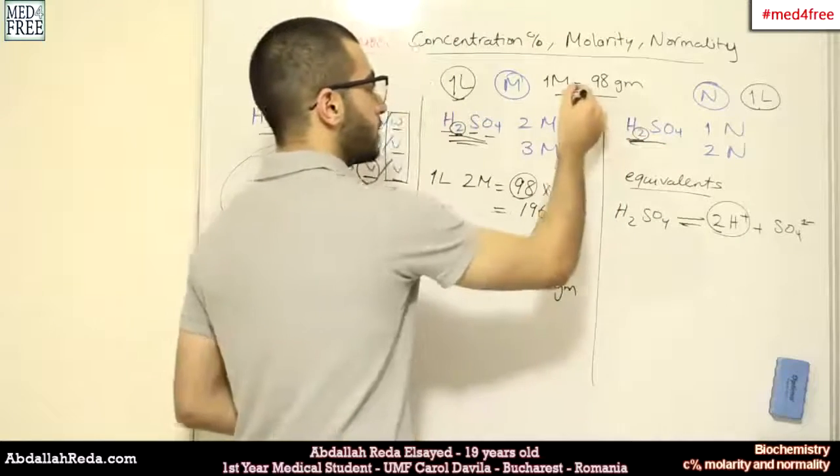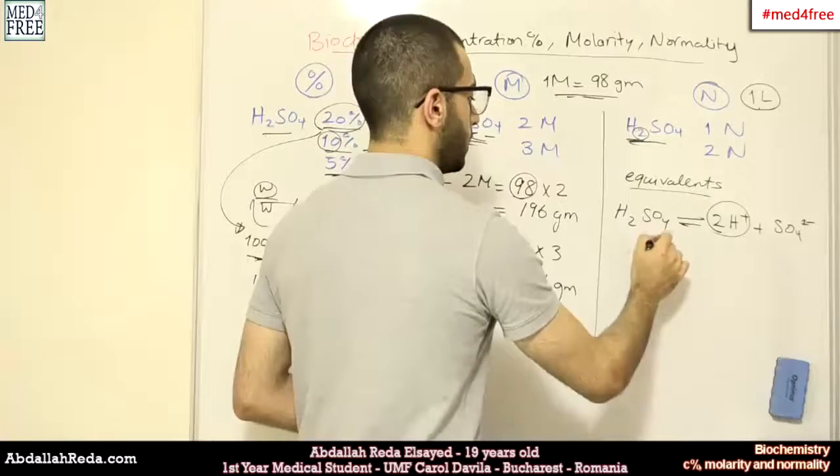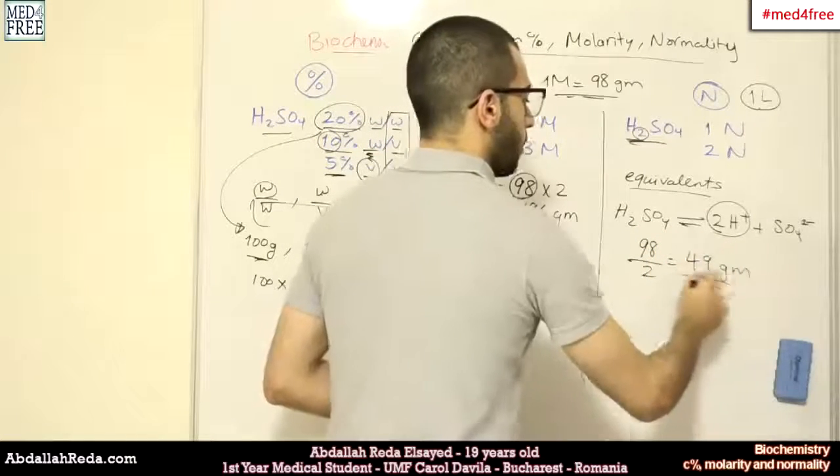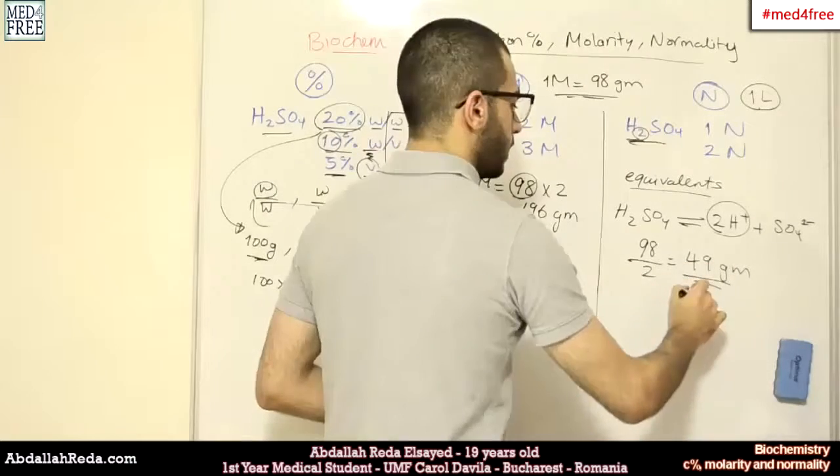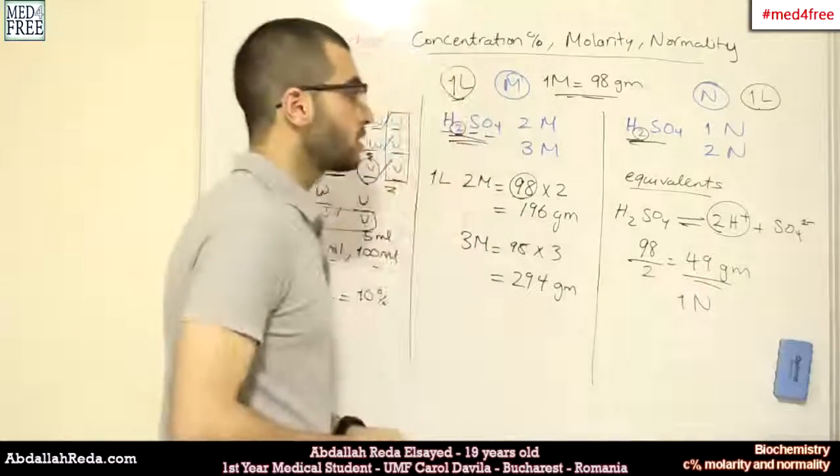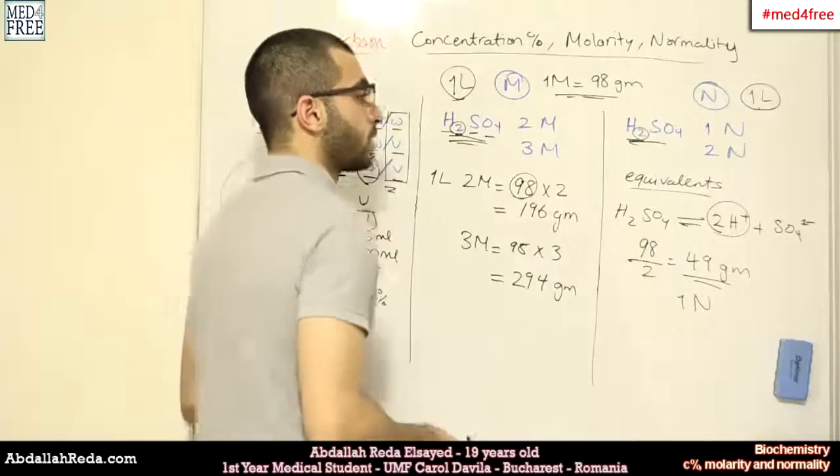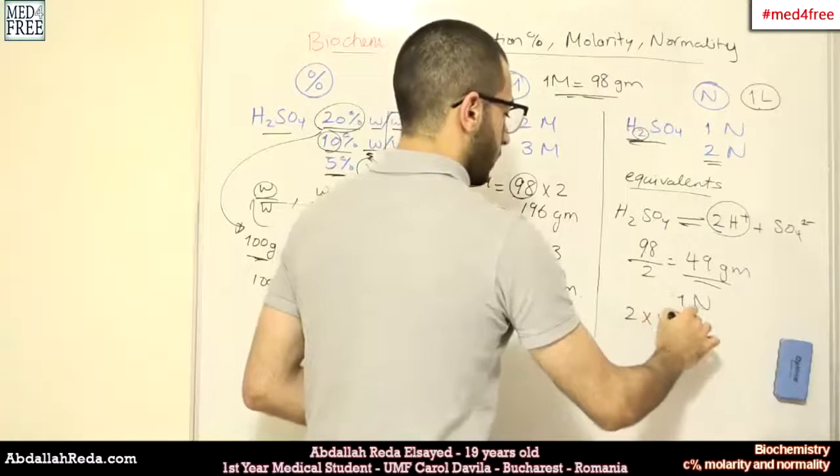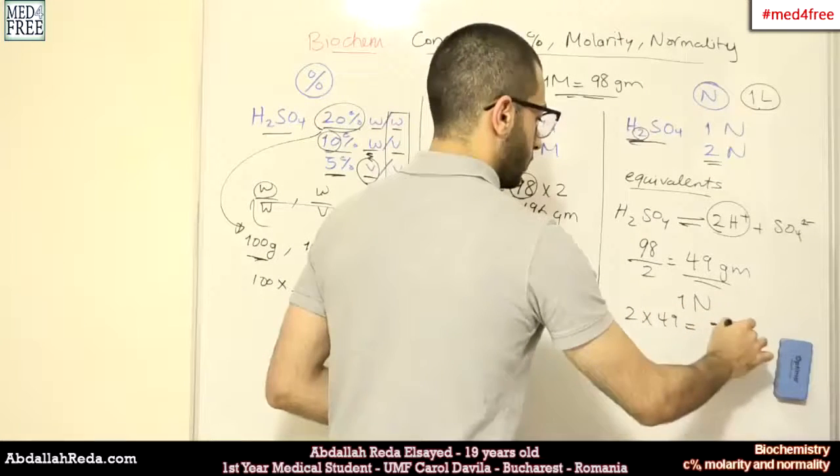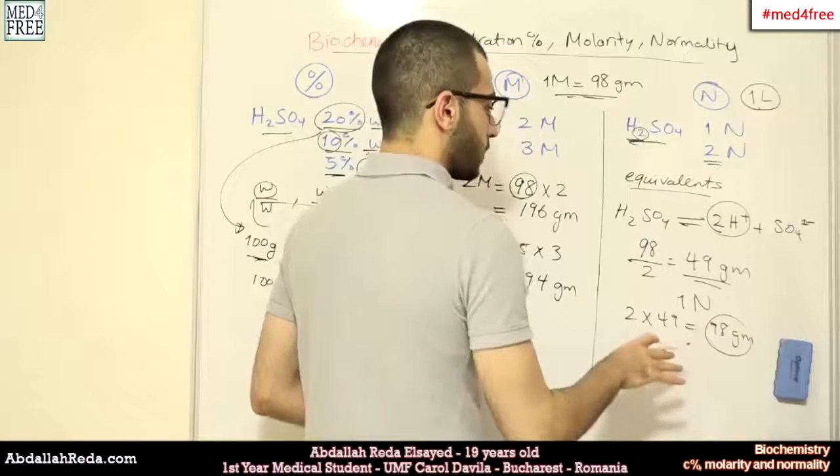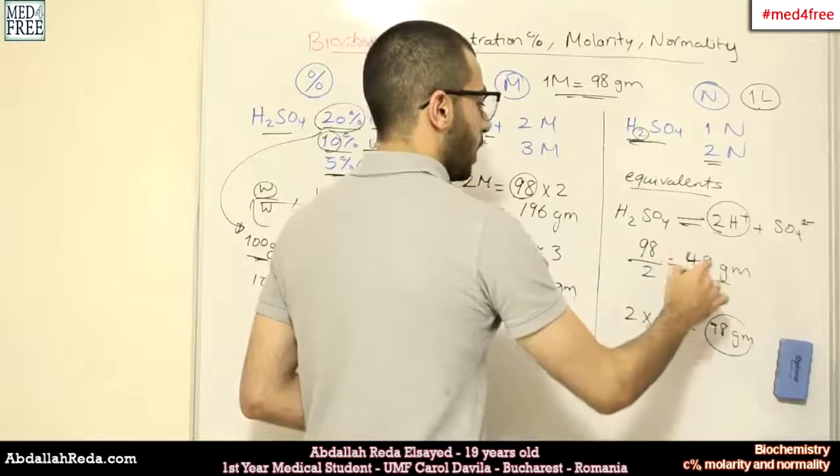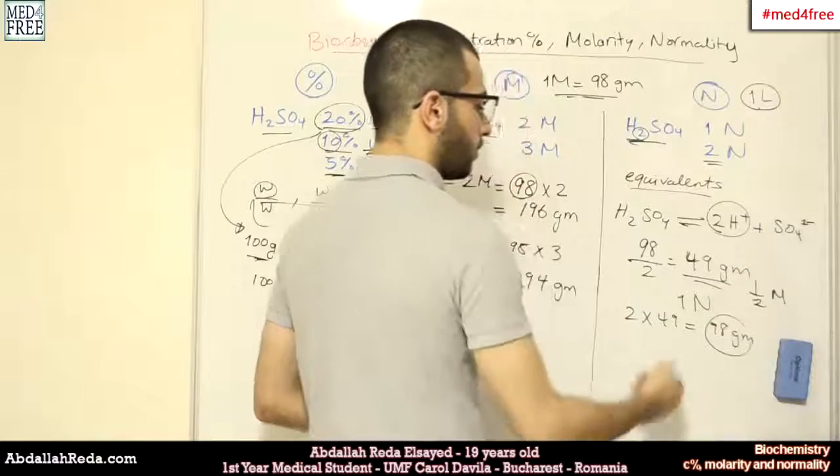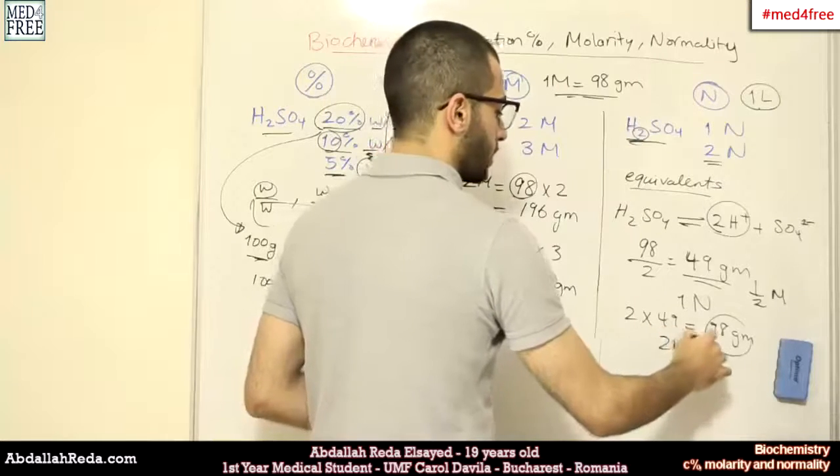So, we take this, 98, and we divide it by 2, we get 49 grams. So, this will be a 1 normal solution of sulfuric acid. A 2 normal solution, accordingly, will contain 2 multiplied by 49, which is 98 grams. We can notice that, in this case particularly, the 1 normal solution is actually half molar, and the 2 normal solution is 1 molar.